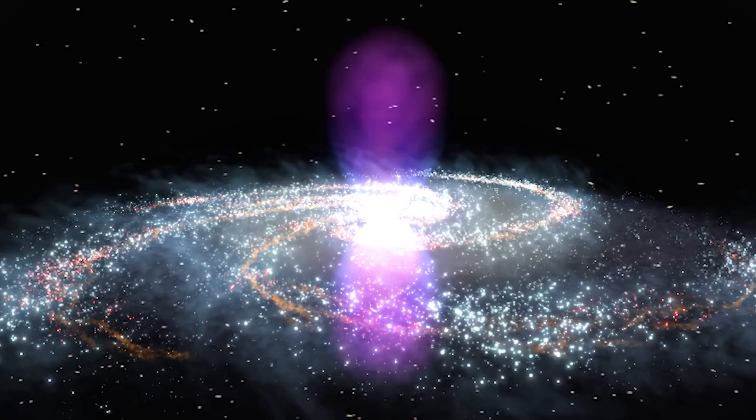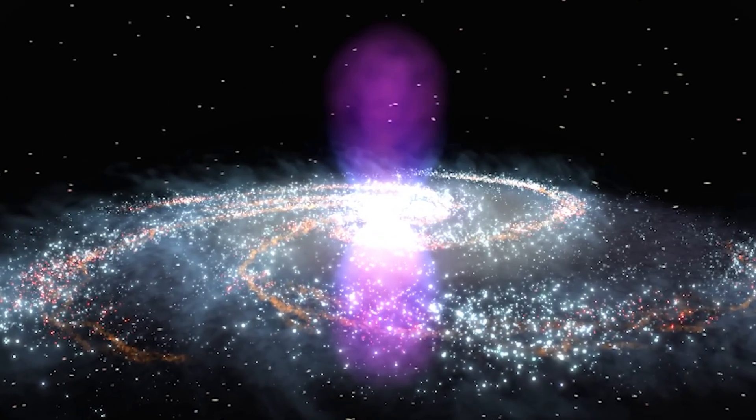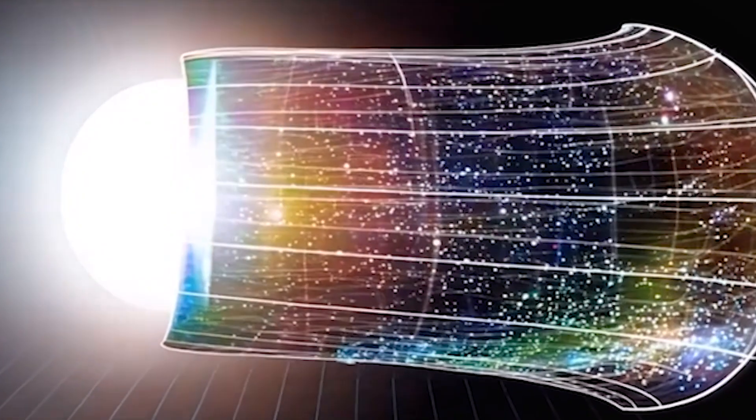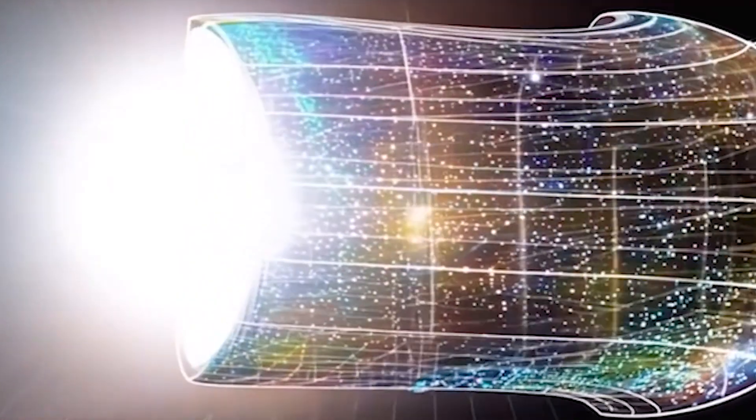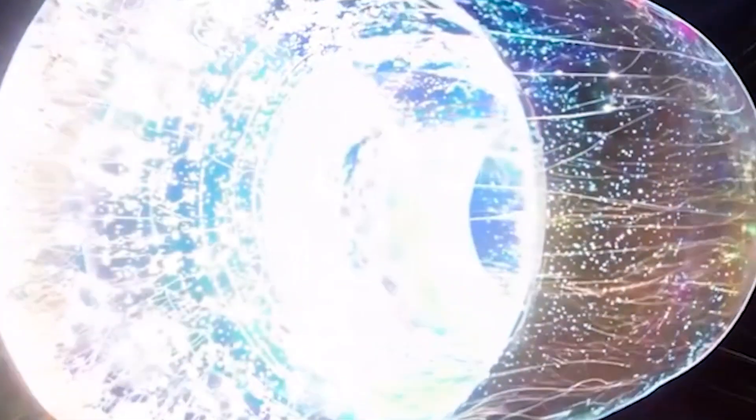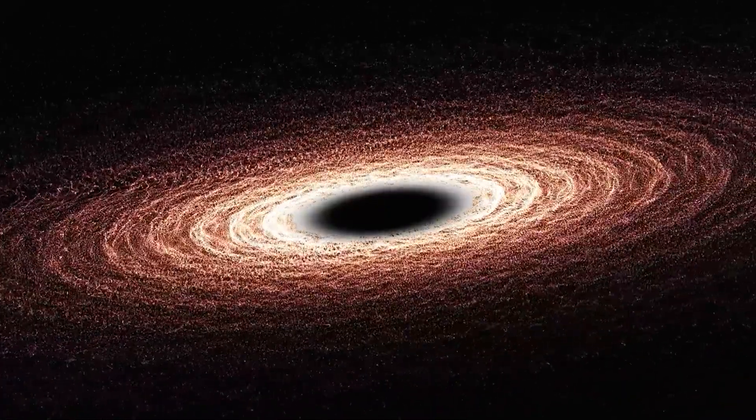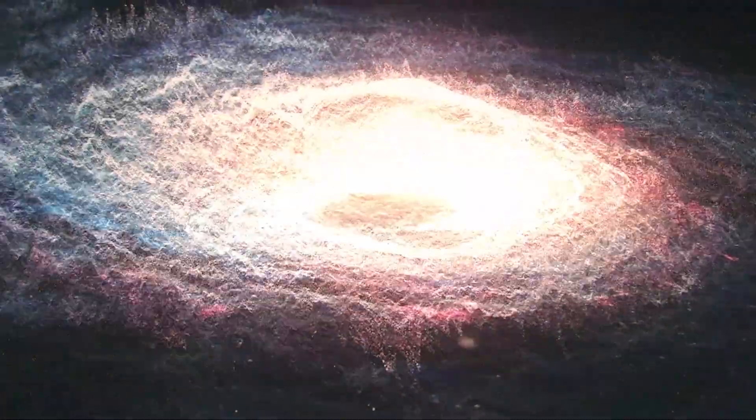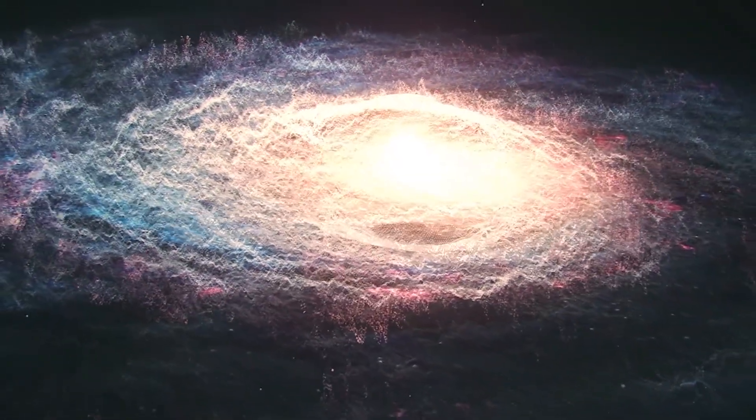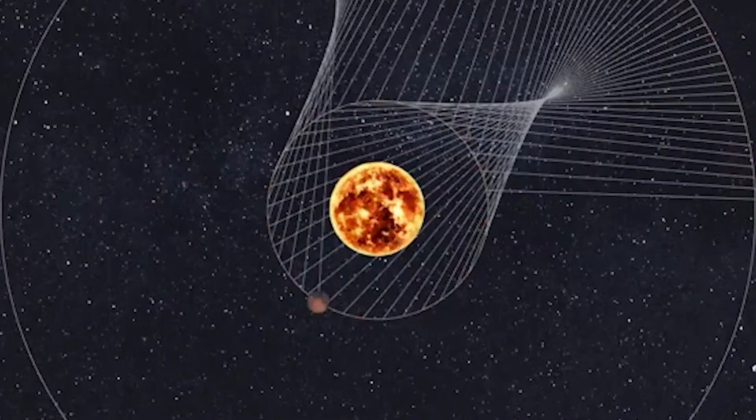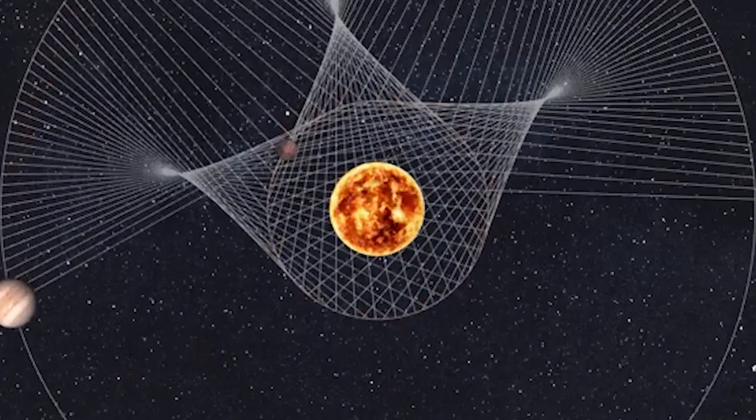The really fascinating part is what lies at the edges of this bubble. As our solar system moves through space, we're approaching the boundary where this hot, empty region meets denser clouds of interstellar material. When we cross that boundary in a few thousand years, it could dramatically change the shape of our heliosphere, the protective magnetic bubble that shields us from dangerous cosmic radiation.